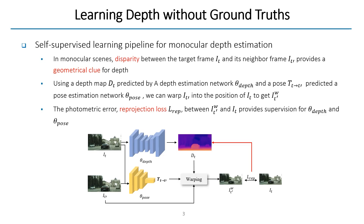Self-supervised learning of monocular depth estimation is an approach to learn depth without costly depth ground truths. In monocular videos, disparity between sequential frames can be used as a geometrical clue for depth. By warping the neighbor frame into the position of the target frame using the predicted depth and pose, we can calculate the photometric error between them, and it is called reprojection loss.